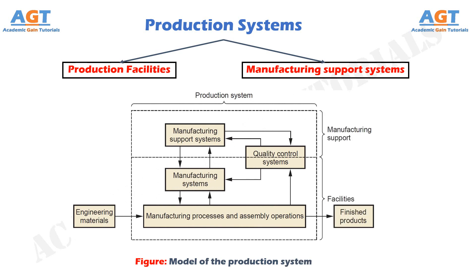Production facilities refer to the physical equipment and the arrangement of equipment in the factory. Manufacturing support systems are the procedures used by the company to manage production and solve the technical and logistics problems encountered in ordering materials, moving work through the factory, and ensuring that products meet quality standards.